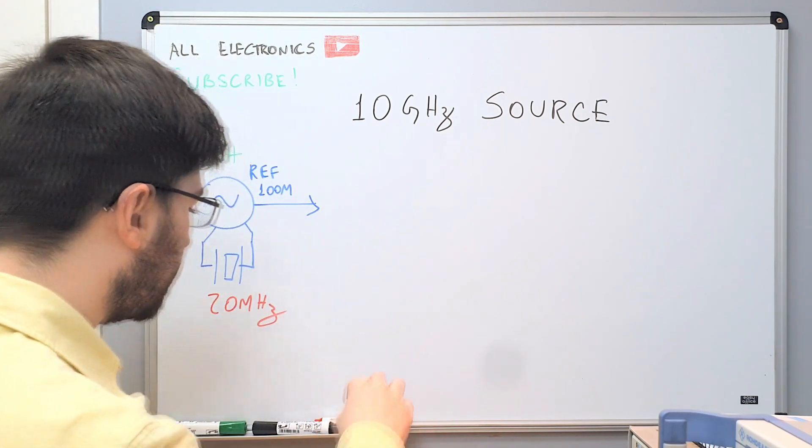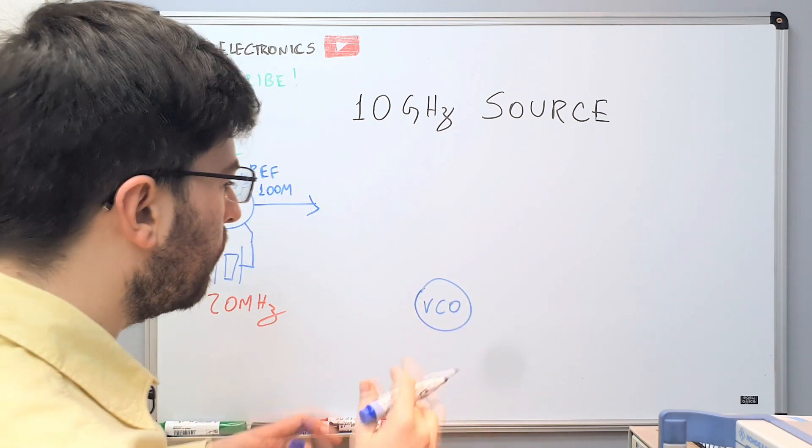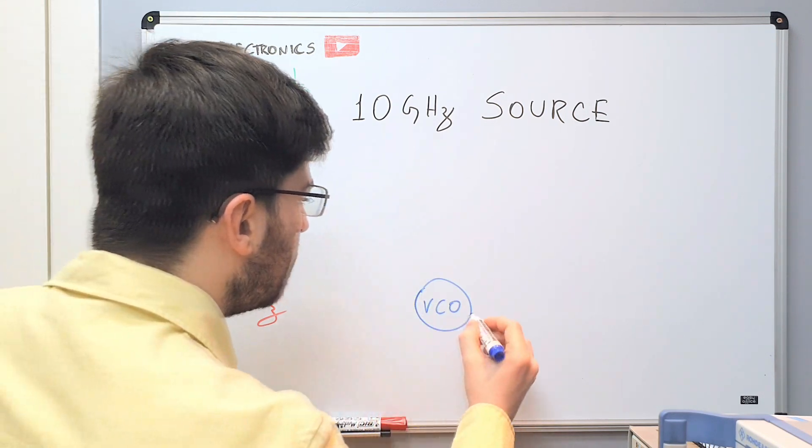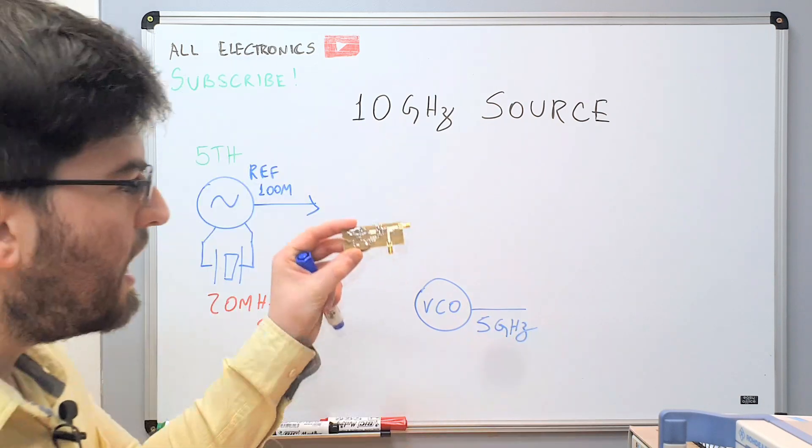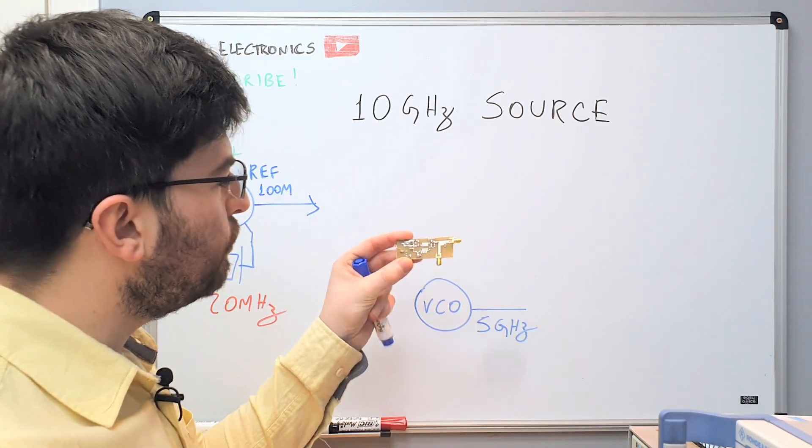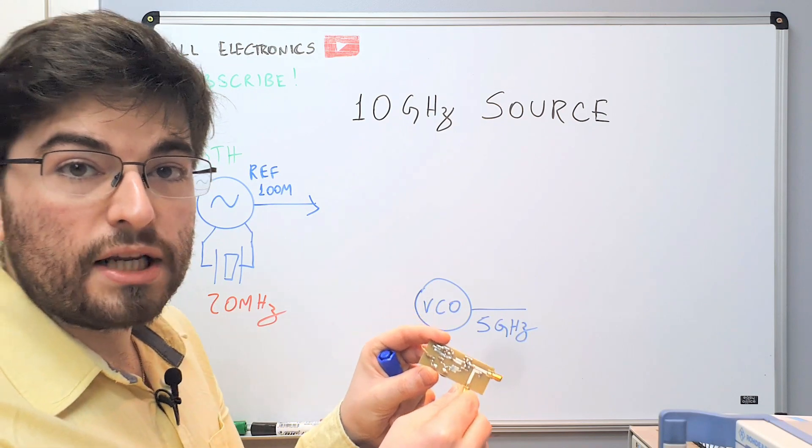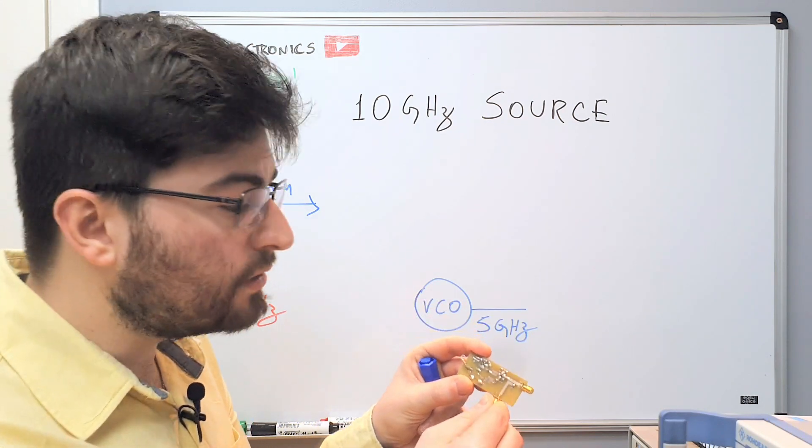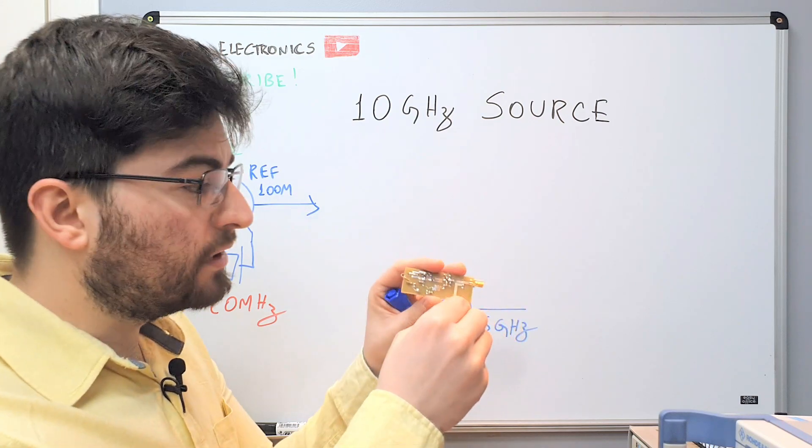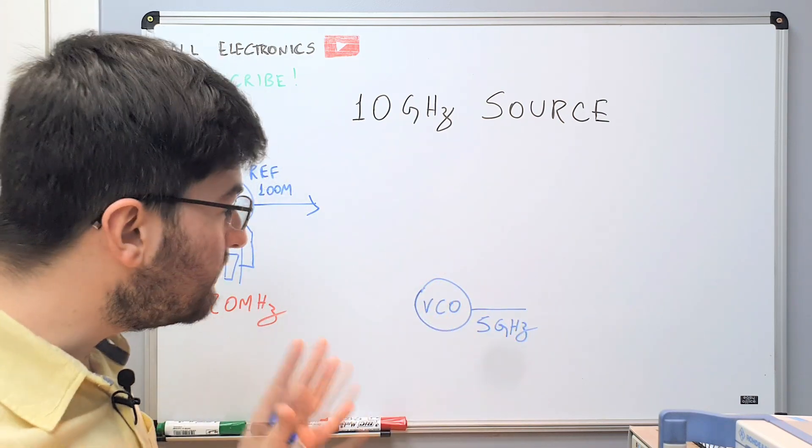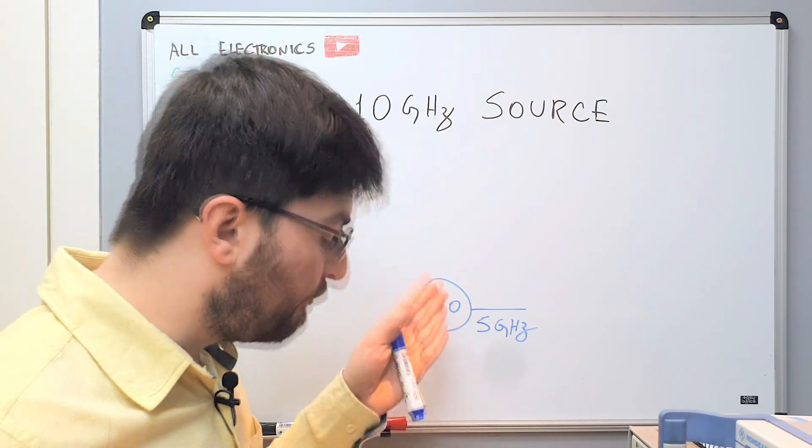So we have the VCO here. This is the VCO and my idea is to run this VCO at 5 GHz and I have here the prototype of the VCO. Now it's only running up to 3.6 GHz. We need to improve it, but this is the prototype and you're going to see it in the next video. But the main idea is to run this VCO at 5 GHz.